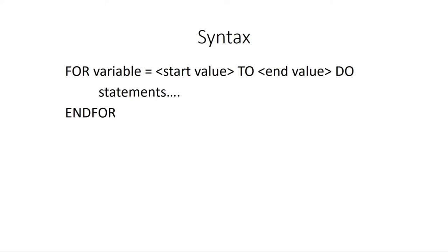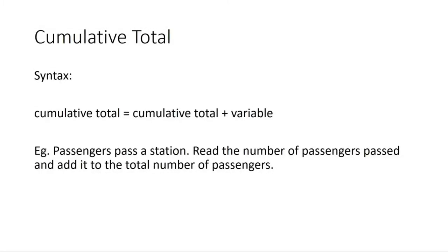Before we examine some questions we need to first understand cumulative total, because we'll need to use that when finding totals, averages, and different kinds of calculations. Cumulative total is used to find a new total — you have a current total and you want to find a new total. The syntax is: cumulative total = cumulative total + variable. We'll need to initialize a cumulative total variable at the start of the algorithm.